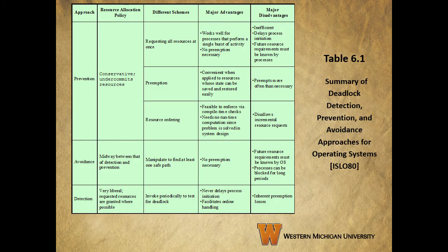Now that we've talked about detection, I'd like to refer you back to table 6.1 on page 266 of your book. In a previous video, I had you stop and read this. Now that we've talked about all three — prevention, avoidance, and detection — revisit this table, take another look at it with what you know now about those three approaches, and make sure you really understand what's going on.